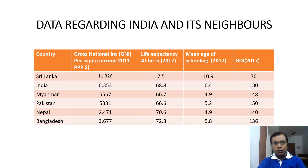In mean years of schooling, as per 2017 figures, Sri Lanka tops the table at 10.9 years — that's the average schooling years — while India's figure is as low as 6.4 years. The HDI rank of Sri Lanka is just 76 while that of India is 130, and Myanmar, Pakistan, and Nepal have better figures than India.